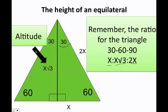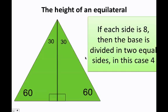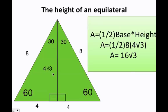Now that I understand where the altitude is and how to find it, let's go back to our problem. We knew that each side was 8, therefore when I cut half of the triangle with the altitude, this side here must be 4. Remember this is x, 2 times x is 4 times 2, and finally the height is going to be 4 times the square root of 3. Now that I have my height, the area of any triangle is 1 half the base times the height — one half times 8 times 4 times the square root of 3 is going to give me 16 times the square root of 3.